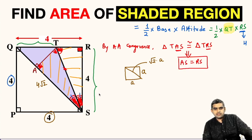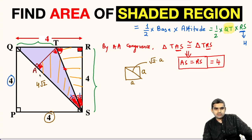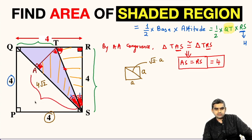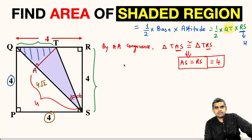Since RS is already given as 4 units, we get AS = 4 units. So this distance AS is equal to 4 units. Now let us focus on triangle QAT.